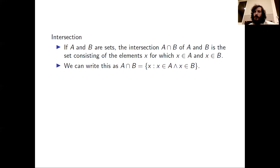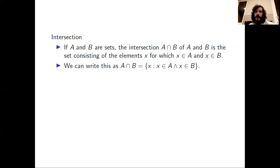We write this more succinctly by replacing the 'for which' with a colon and replacing the 'and' with a wedge. We put squiggles around to represent that it is the set of X with the property that X is an element of A and X is an element of B.